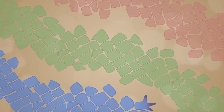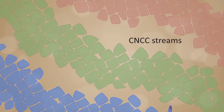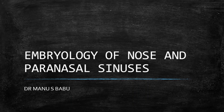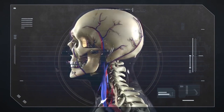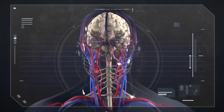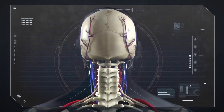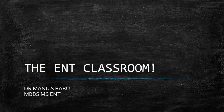Any abnormality in the migration of these cranial neural crest cells leads to abnormal faces. With this background, we will dwell in the realm of the embryology of the nose and the paranasal sinuses and try to simplify it. Welcome to the ENT Classroom, a one-stop for simplified ENT and head and neck surgery.